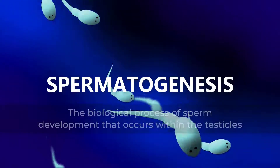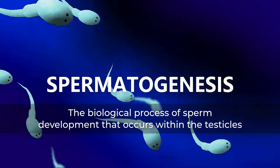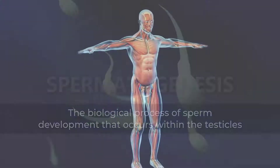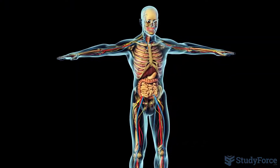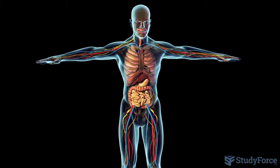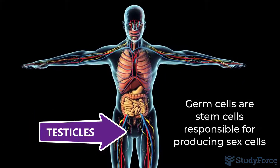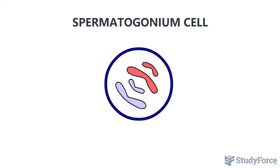Spermatogenesis is the biological process of sperm development that occurs within the testicles. To start the process, specialized germ cells within the testes divide mitotically to produce spermatogonia. Shown here is a single spermatogonium.